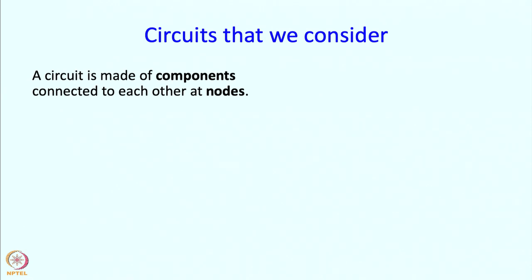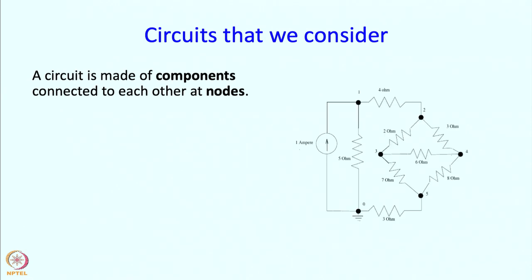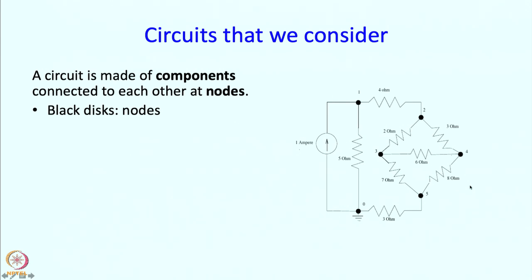Let me talk a little bit about the circuits we are considering. A circuit is made of components connected to each other at nodes. Here is an example. In this example, these black disks — this one, this one, this one — are called nodes.